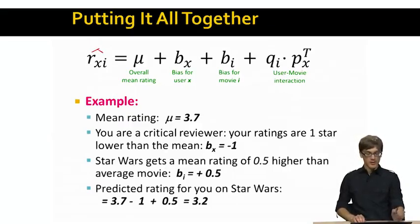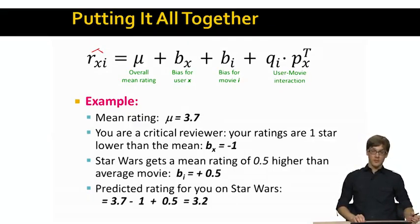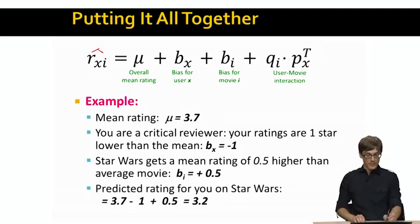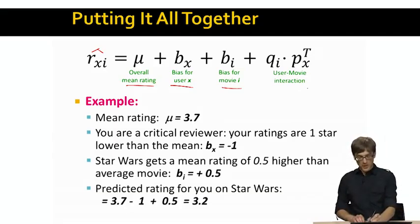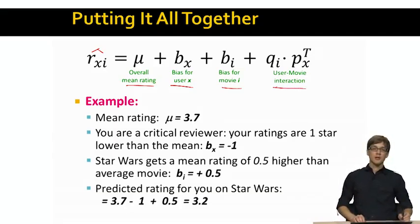So the way we can put everything together is the following. We say that our predicted rating for user x and movie i is the overall mean rating, plus the bias for user x, plus the bias for movie i, plus the user-movie interaction. So the way we would reason now about the recommendation, we would say the mean rating is 3.7.